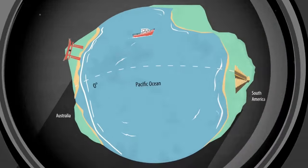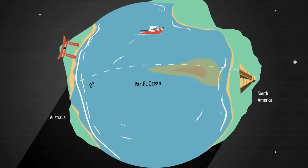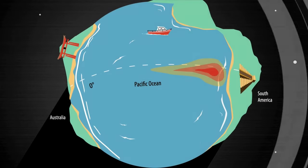El Niño is a natural phenomenon that shows up when ocean surface temperatures in the eastern central Pacific become warmer than usual.